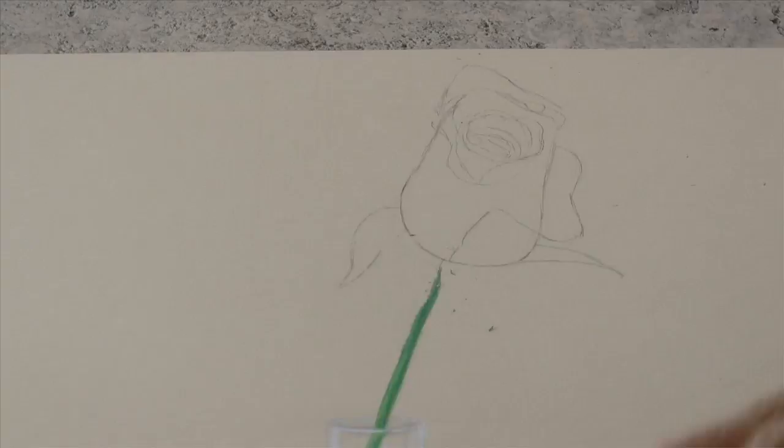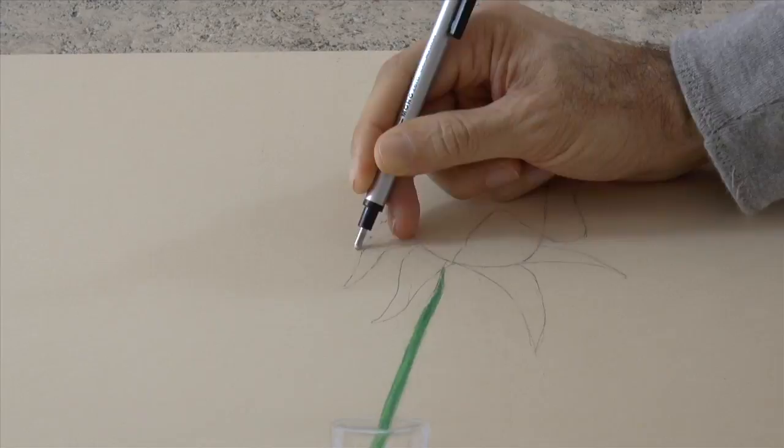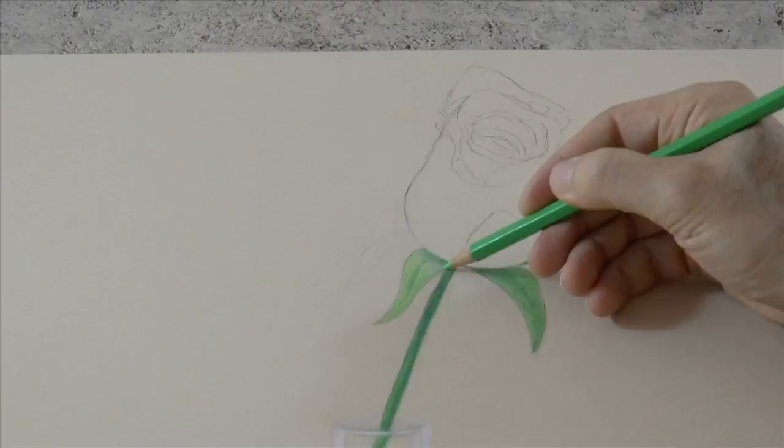I will correct some leaves which I didn't like how they looked in the position they were in. That's better. I use two tones of green to do the lights and shadows.